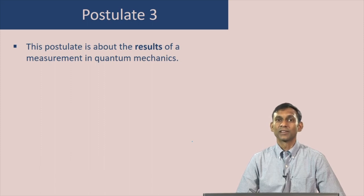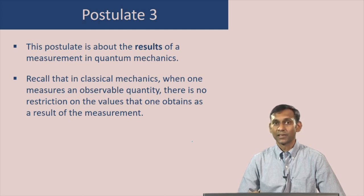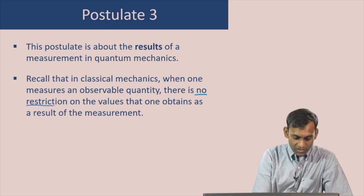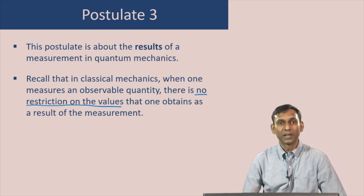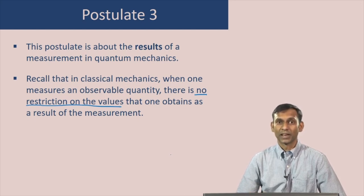This postulate is about the results of a measurement in quantum mechanics. Recall that in classical mechanics, if one measures an observable quantity — let us say we measure energy of a particle — we can get any possible value of that energy. There is no restriction on the values that one obtains when one makes a measurement on a classical particle. However, that is different in quantum mechanics, and that is what postulate 3 is about.